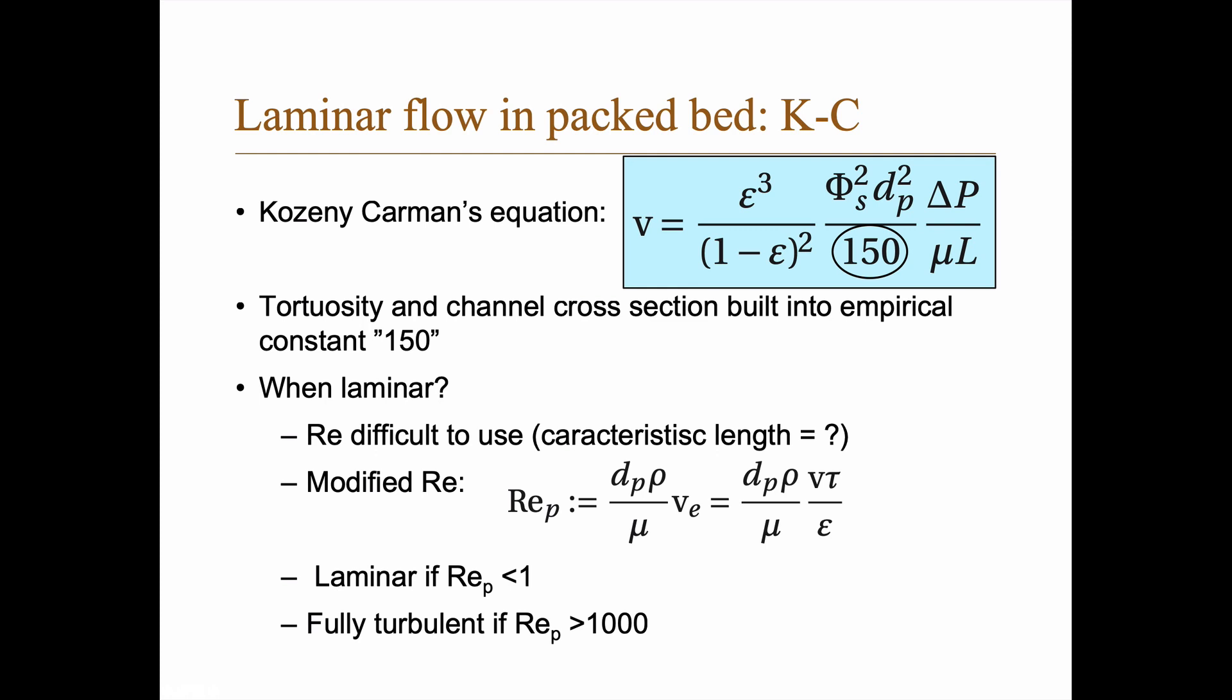And thus it's often, we often use the modified Reynolds number which is defined in terms of the diameter of the particle instead of the diameter of the channel. So the modified Reynolds number is the diameter of the particle times the density divided by the viscosity times the effective velocity. And if the modified Reynolds number is less than one, then we have laminar flow. And if it's larger than a thousand, then we have fully turbulent flow.